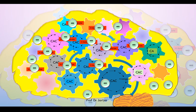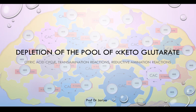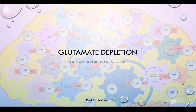Depletion of alpha-ketoglutarate leads to the cessation of the TCA cycle — the TCA cycle comes to a standstill and the brain is starved of energy. Not only that, depletion of the pool of alpha-ketoglutarate also adversely affects the transamination reactions and reductive amination reactions, and alpha-ketoglutarate is no longer available to fix ammonia.